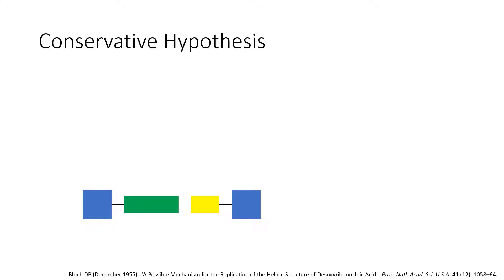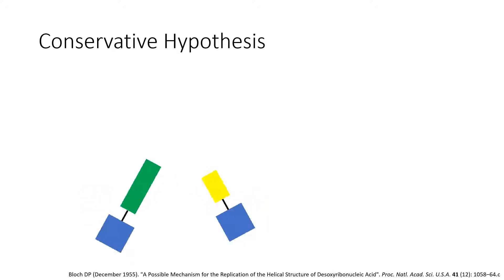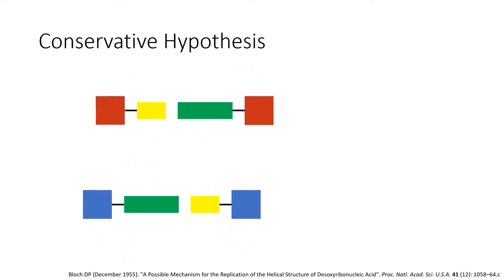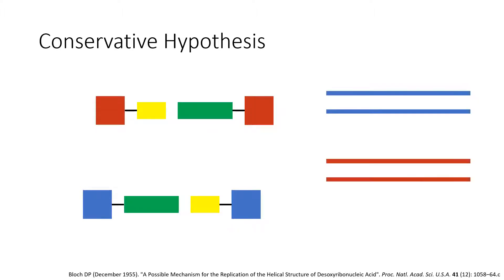The conservative hypothesis was raised in 1955 by David P. Bloch. In this hypothesis, proteins present on the DNA known as histones twist the DNA molecule which expose the bases present. New DNA is synthesized and the latter twists again. The parental strands pair together and the daughter strands pair together. In the conservative hypothesis, one DNA molecule is composed entirely of original material, while the other DNA molecule is composed entirely of newly synthesized material.